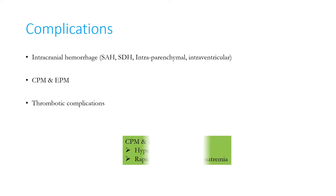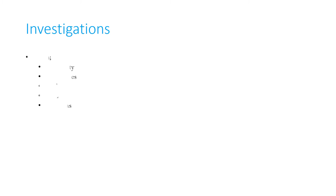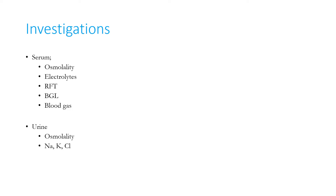Central pontine myelinolysis and extra-pontine myelinolysis are complications of hypernatremia per se and of rapid correction of hyponatremia. Investigations in hypernatremia include serum osmolality, electrolytes, renal function tests, blood glucose, and blood gas. In urine, go for osmolality, sodium, potassium, and chloride.